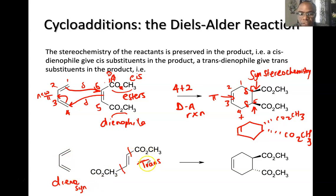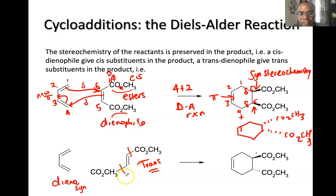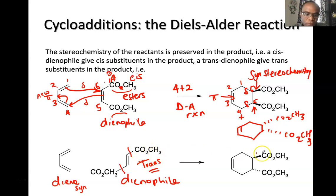If the dienophile is trans — ester groups 180 degrees apart — then the esters will end up in opposite configurations in 3D space. You'll have one toward you and one away, but never both wedge or both dash when starting with a trans dienophile. Based on the structure of the dienophile, you can predict whether ester groups will both be toward you, both away, or one toward and one away, which is what happens with a trans dienophile.